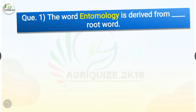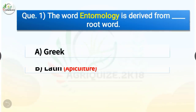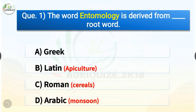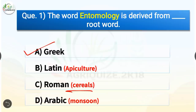Question number 1. The word entomology is derived from which root word? The options are Greek, Latin, Roman, or Arabic. The correct answer is option A, Greek. The word entomology is derived from the Greek root word, whereas the word apiculture is derived from Latin. The word cereals is derived from Roman root word and the word monsoon is derived from Arabic.